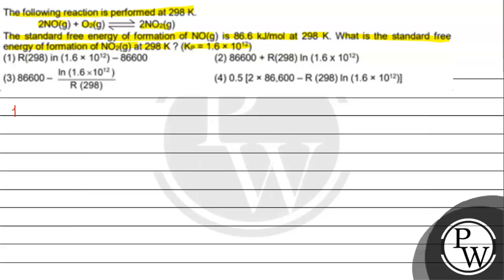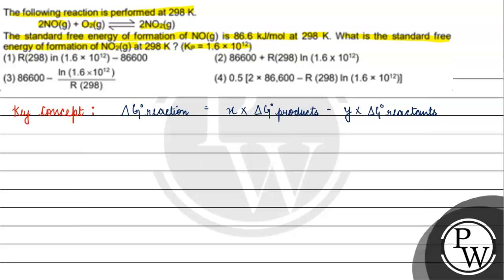The key concept for this reaction is: ΔG° of reaction equals X times ΔG° of products minus Y times ΔG° of reactants, where X is the stoichiometric coefficient of the products and Y is the stoichiometric coefficient of the reactants.